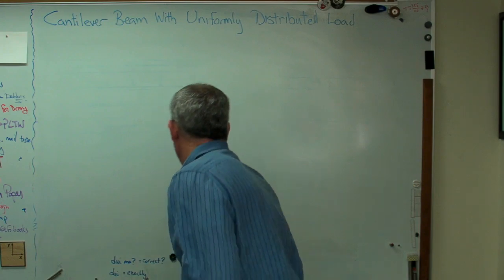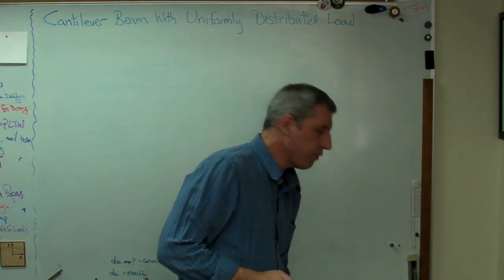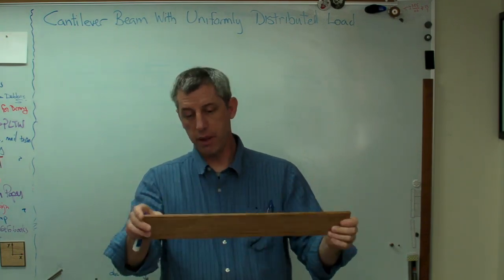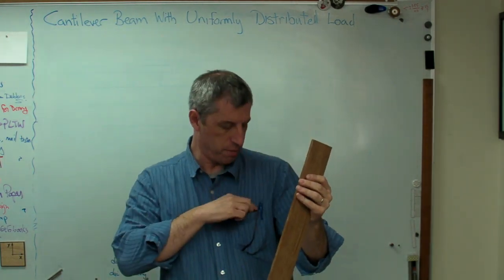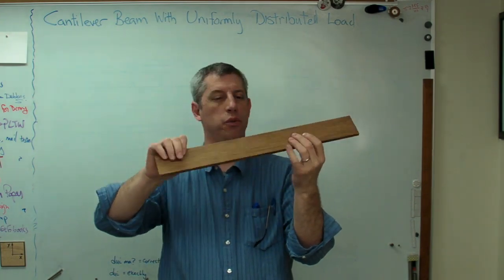Got my marker right here. What I'm going to do here is take a cantilevered beam. Now this is just a board. By the way, this is a fairly interesting board. It's made out of laminated bamboo. It's a product called Lamboo, and it's really uniform.